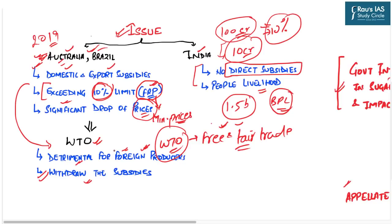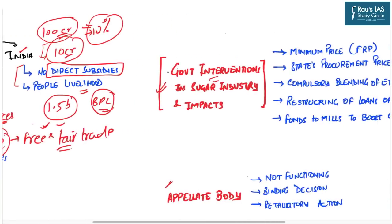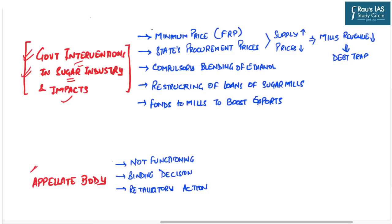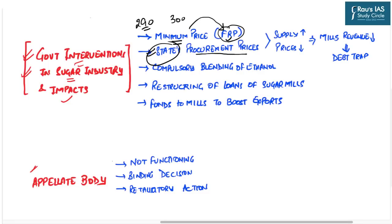India has therefore challenged this ruling in the WTO's appellate body. Looking at the various government interventions in the sugarcane industry: the most important is the Fair and Remunerative Price (FRP), a minimum price ensured by the government to procure sugarcane from farmers. The FRP is set by the central government, but each state also has its own procurement prices, which are generally higher than the central FRP. For example, if the central FRP is Rs.290 per quintal, a state may offer Rs.300 per quintal.